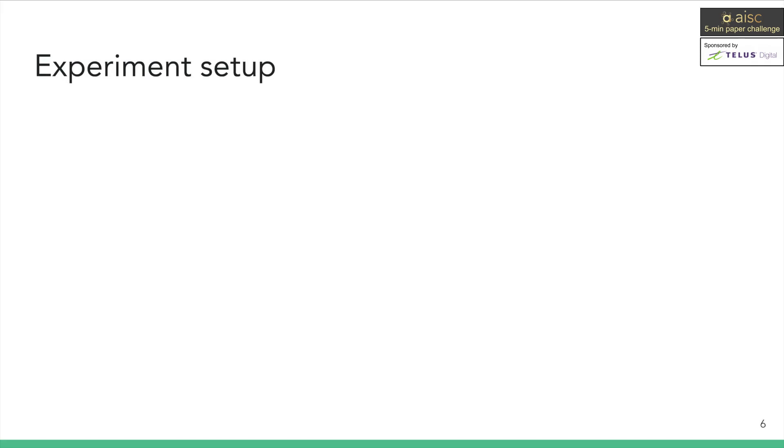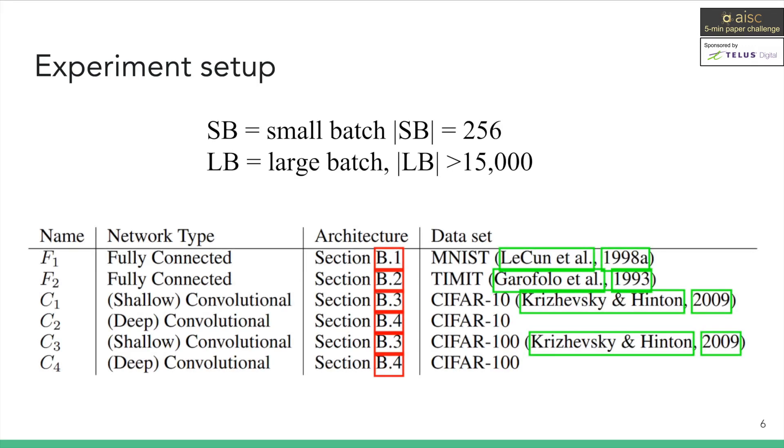Let's first take a look at how the authors set up the experiment. They divide the experiment into two regimes: small batch training with batch size 256 and large batch training with batch size 15,000. The goal is to compare performance between the two. They choose two basic neural network architectures as test subjects, the fully connected network and convolutional network, and supervised learning on standard research datasets as training tasks.